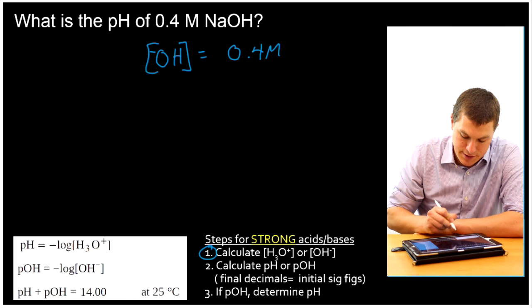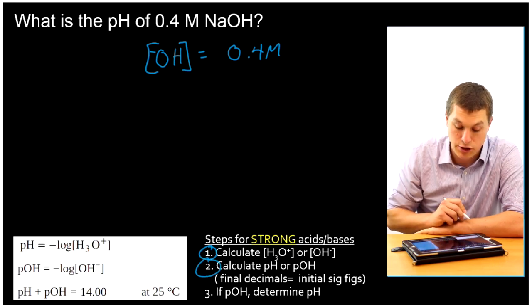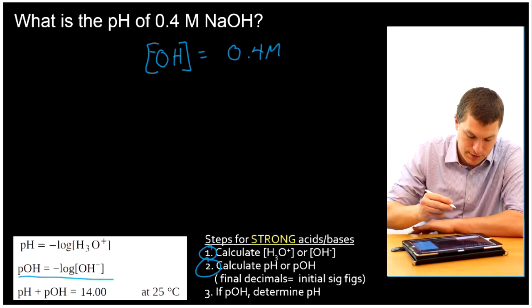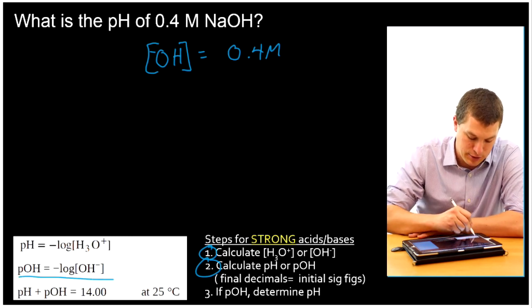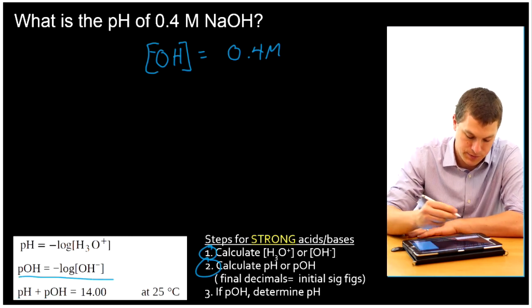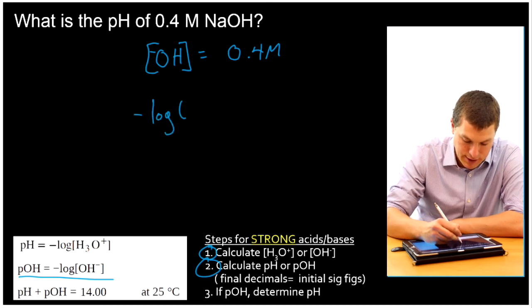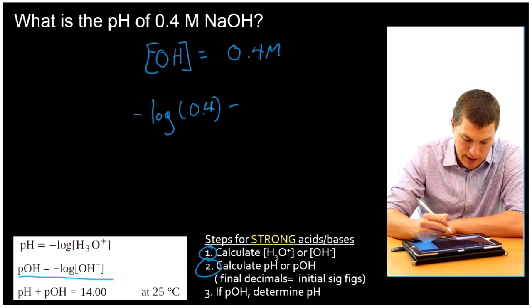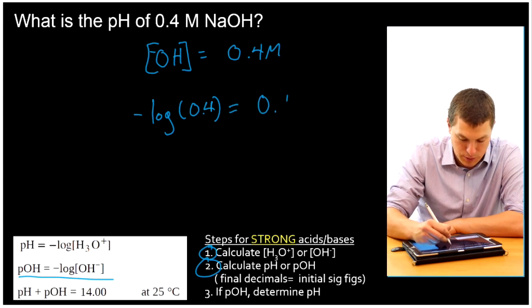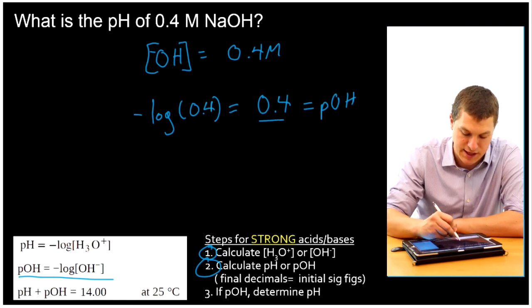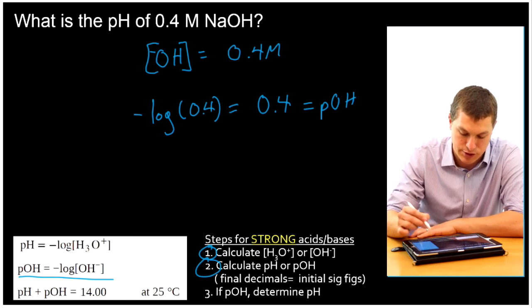So my hydroxide concentration is 0.4 molar. And that's step one of determining the concentration. Step two is calculate the pH or pOH. Well, in this case, since I have hydroxide, I'm going to calculate the pOH. And then after that, I'm going to end up using this equation to get the pH. So my pOH is negative log of my hydroxide concentration. And that turns out to be exactly 0.4 for my pOH. Just a weird coincidence that these two numbers are the same. That's not usually true.